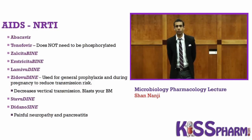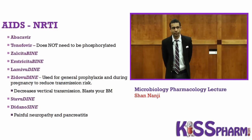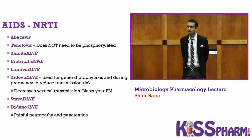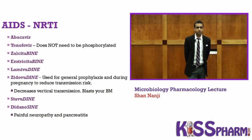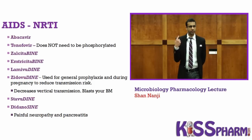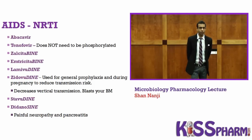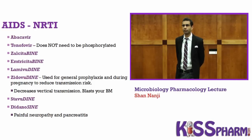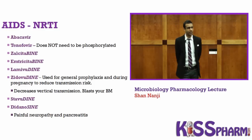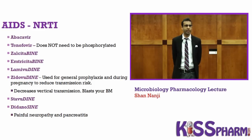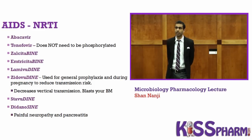To summarize: the NRTI that does not need to be activated by thymidine kinase is tenofovir. The one used to decrease vertical transmission risk is zidovudine. The one that causes painful neuropathy and pancreatitis is didanosine. Zidovudine also causes megaloblastic anemia. All NRTIs competitively inhibit nucleoside binding to reverse transcriptase, all have the Dean Bean Seen sound except tenofovir and abacavir.